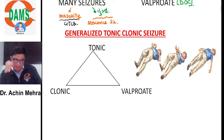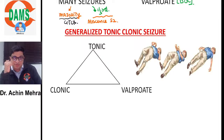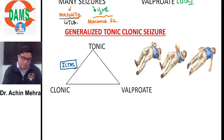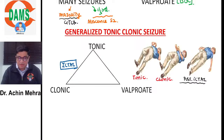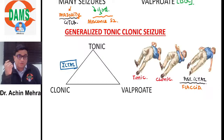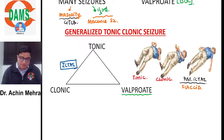GTCS comes in three phases: preictal, ictal, and postictal. In the ictal phase, the first is the tonic phase with tonic posturing, followed by the clonic phase with jerky movements, and finally the postictal phase where the patient is flaccid. The drug of choice for GTCS is valproic acid.